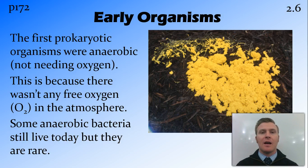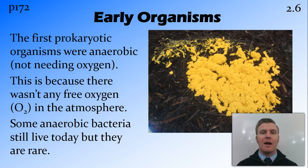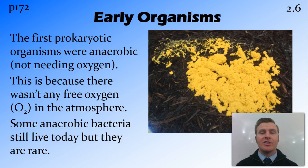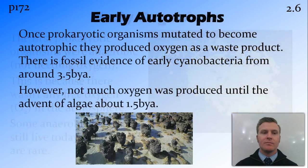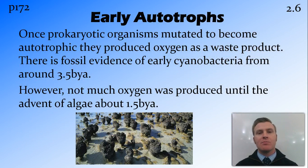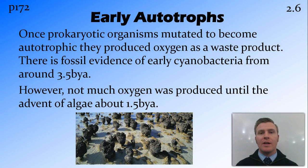There are still anaerobic bacteria — prokaryotic bacteria that live today — but they're not very common and have far been overtaken by aerobic bacteria. The big thing about aerobic bacteria is that they are able to use oxygen for the process of respiration, which is a very efficient way for them to release energy from organic molecules. Once these prokaryotic organisms started to become autotrophic, they started to make their own energy by harnessing the energy from the sun, and as a waste product they produced oxygen.